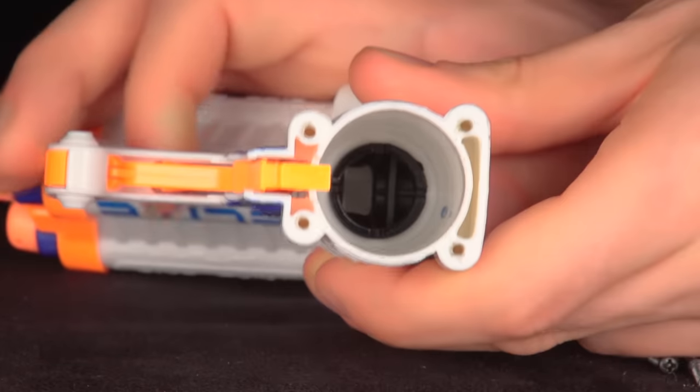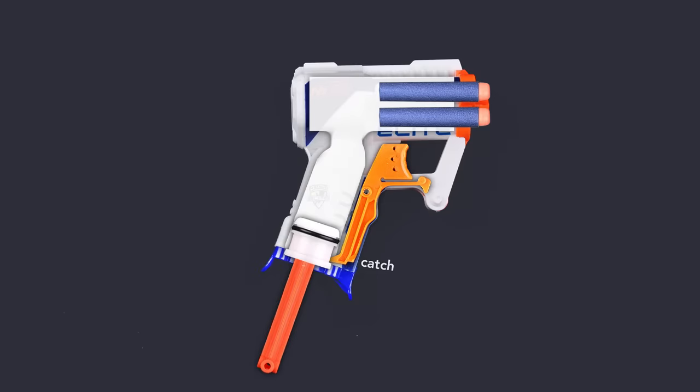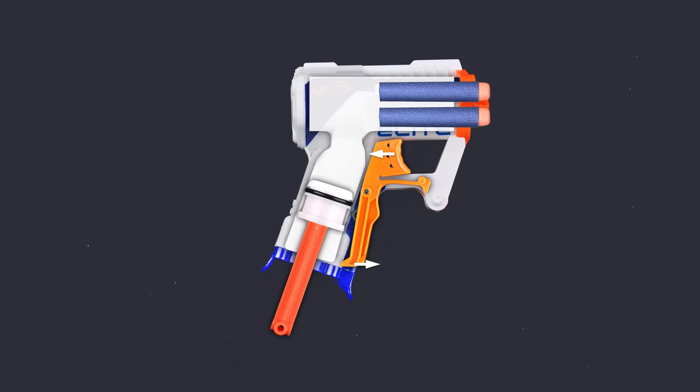When I pull on the trigger, the catch moves and releases the spring. This mechanism works because the catch and trigger are the same piece of plastic. It pivots on a metal pin near the center, so when the trigger is pulled back, the catch moves forward and releases the energy in the spring.